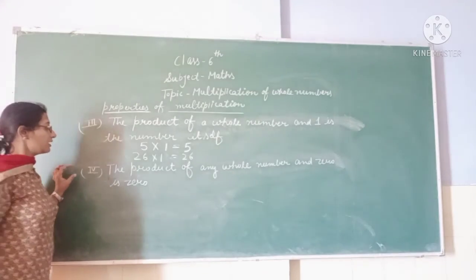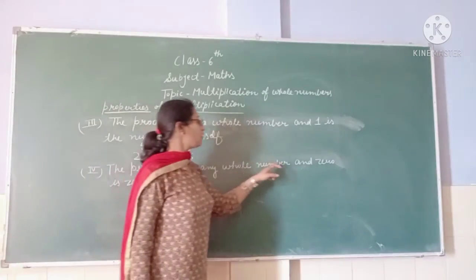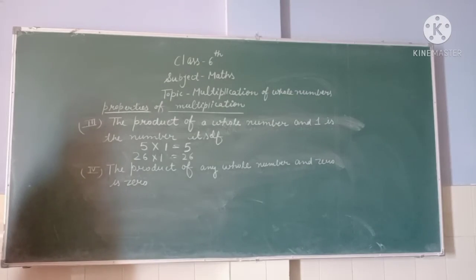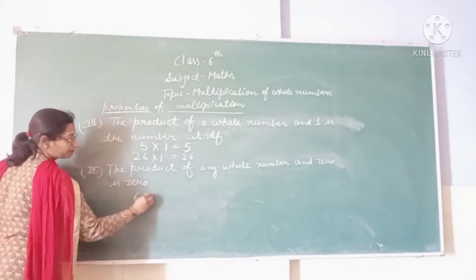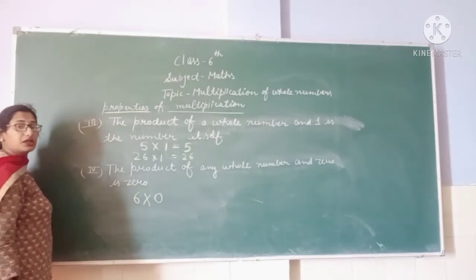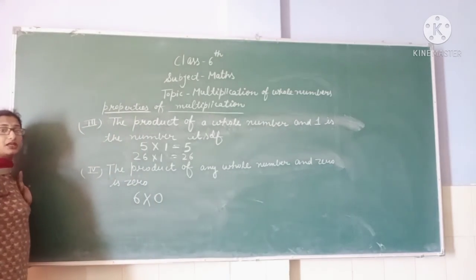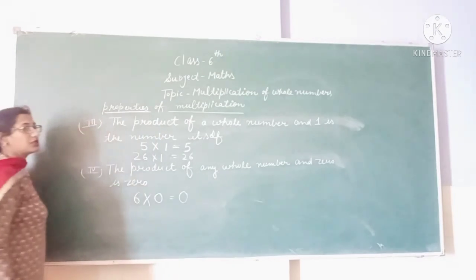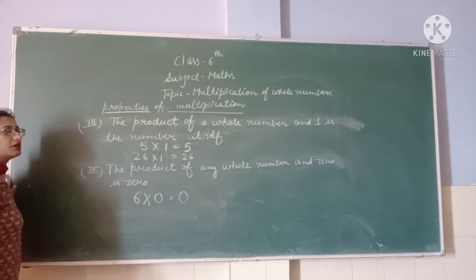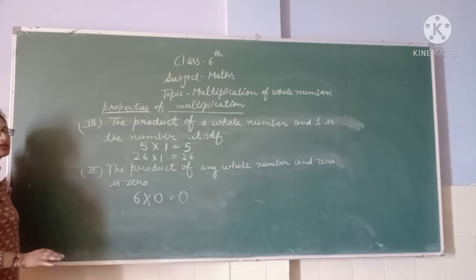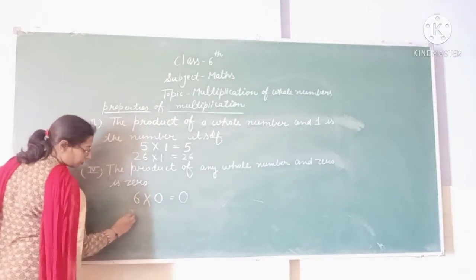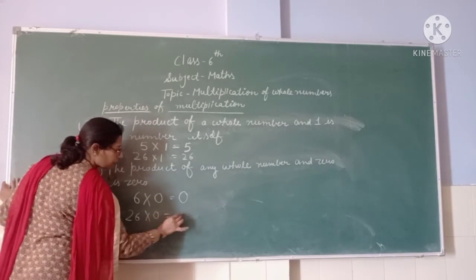The fourth property is: the product of any whole number and zero is zero. If we multiply any whole number by zero, the result is zero. For example, 6 into 0 is 0, and 26 into 0 is also 0.